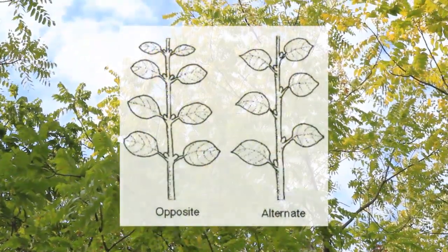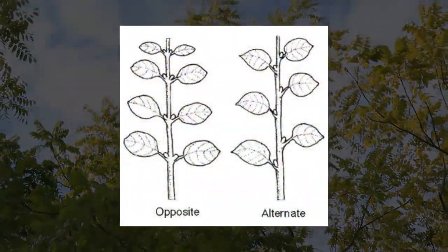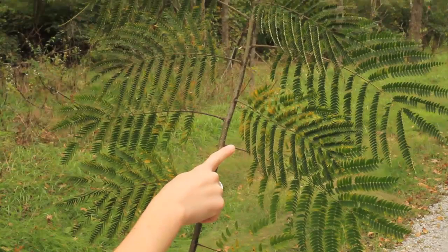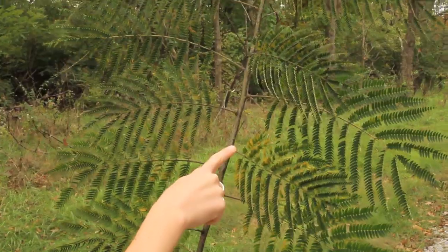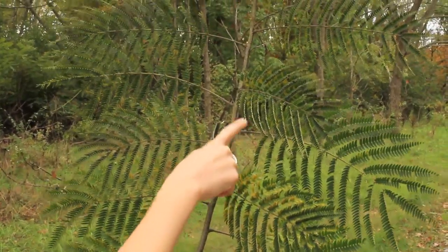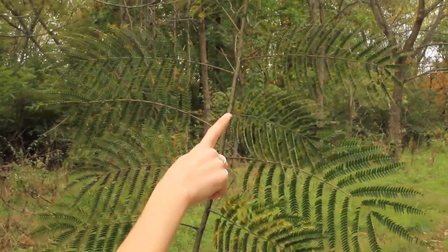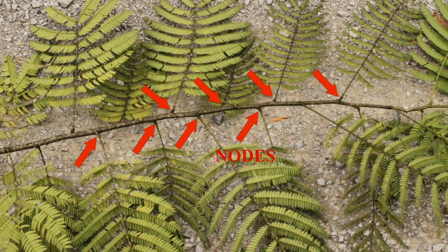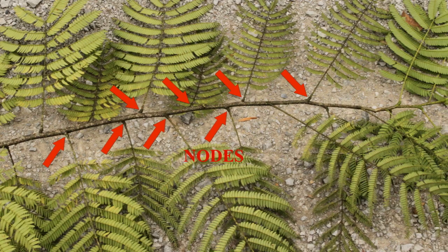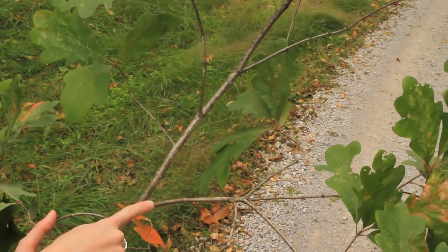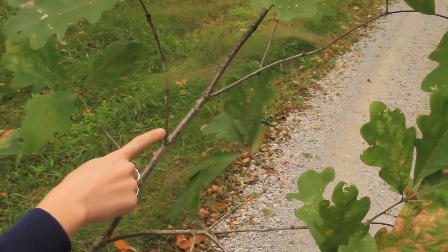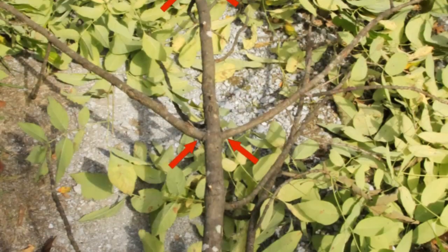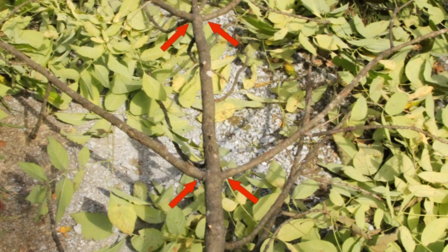Trees have different branching habits. The two branching habits we will discuss are alternate and opposite. The nodes of the tree are the points on the branch where new branches originate. On alternately branched trees, each node has only one branch.